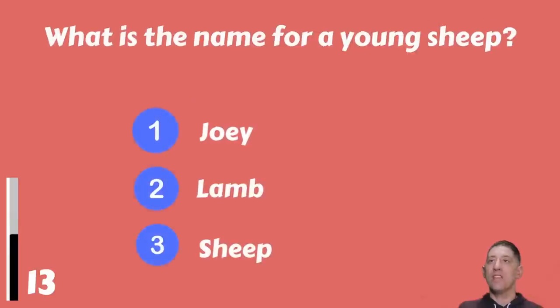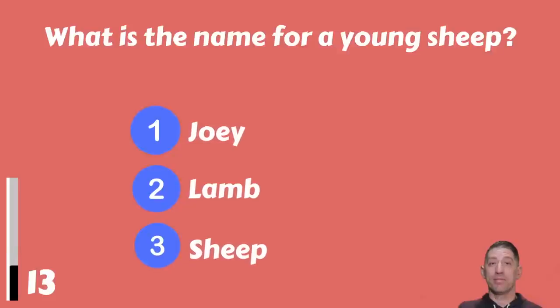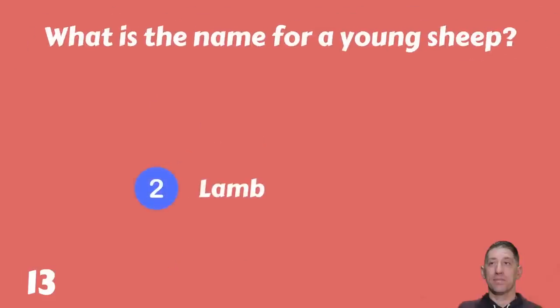What is the name for a young sheep — a joey, a lamb, or a sheep? The answer is a lamb.